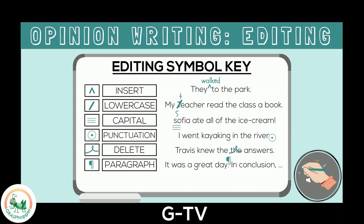Last is the editing symbol for spelling. To show a word has been spelled incorrectly, you write the letters SP below the word and then write the correctly spelled word above it. For example: 'The sky was raney and dark.' The word rainy is spelled wrong, so I write SP below it and write the correct spelling above. If you know a word is spelled wrong but are unsure how to spell it, you can still use SP to help you remember to look it up or ask for help.